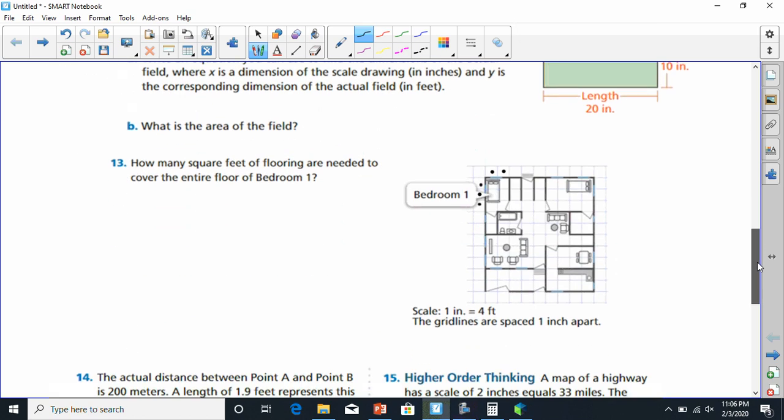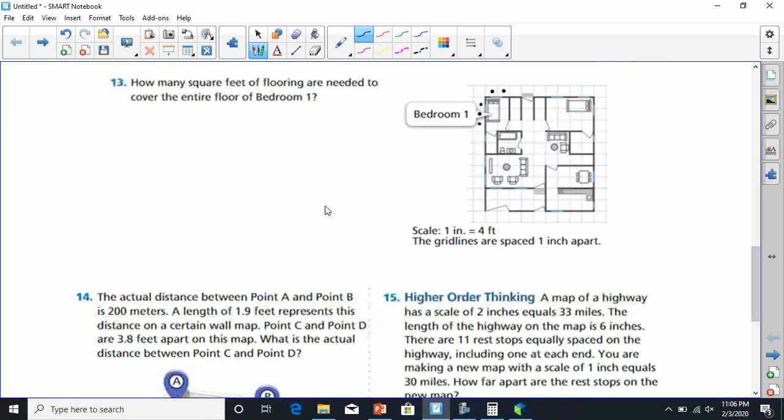Next, I'm going to be doing number 13. How many square feet of flooring are needed to cover the entire floor in bedroom 1? If I go to bedroom 1, I see that bedroom 1 is pretty small. It's got 1, 2 by 1, 2, 3 as far as these little blocks. It says 1 inch equals 4 feet, and all the grid lines are spaced 1 inch apart. So every one of these little grid lines is really 4 feet.